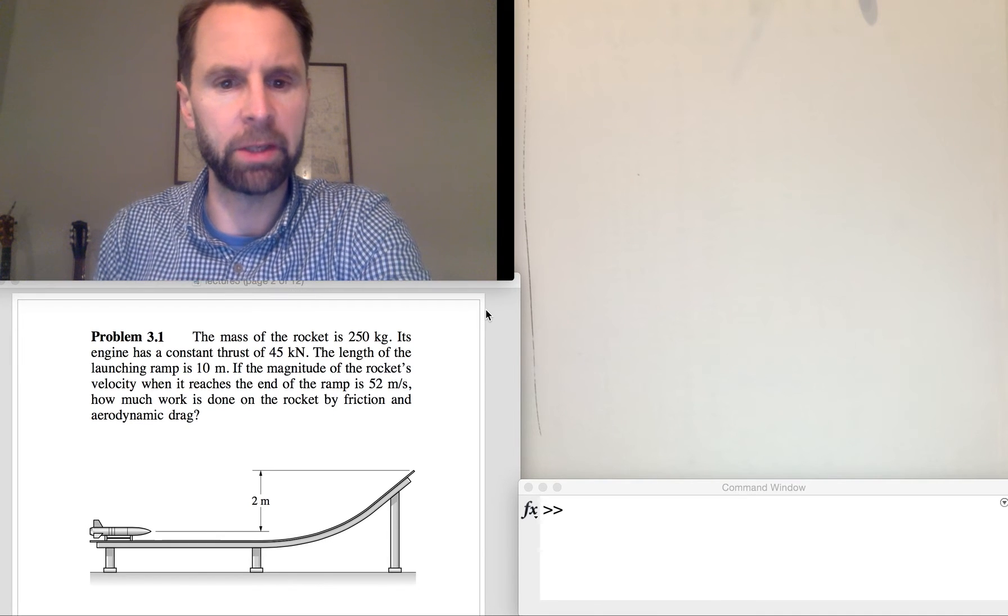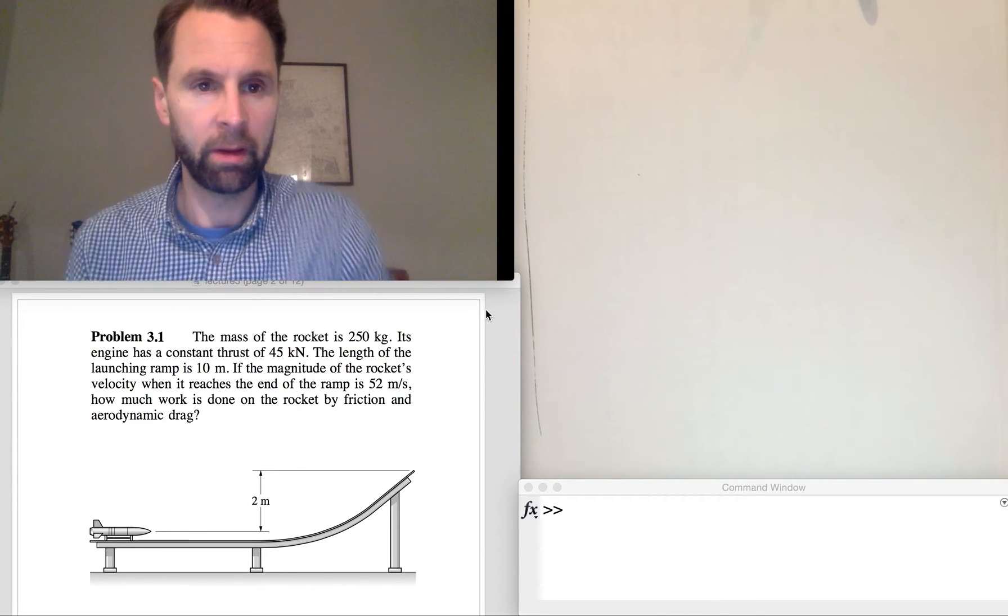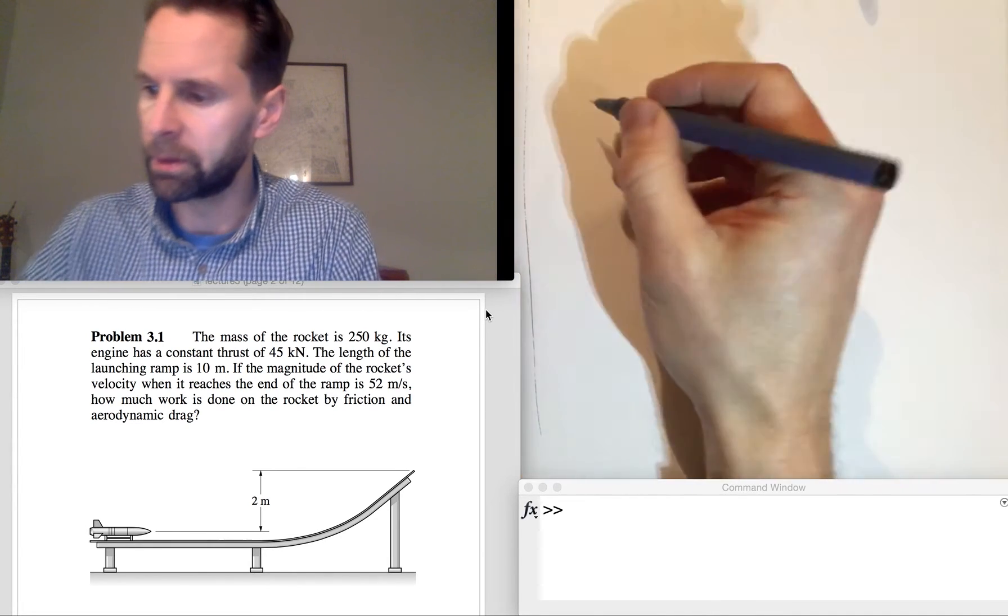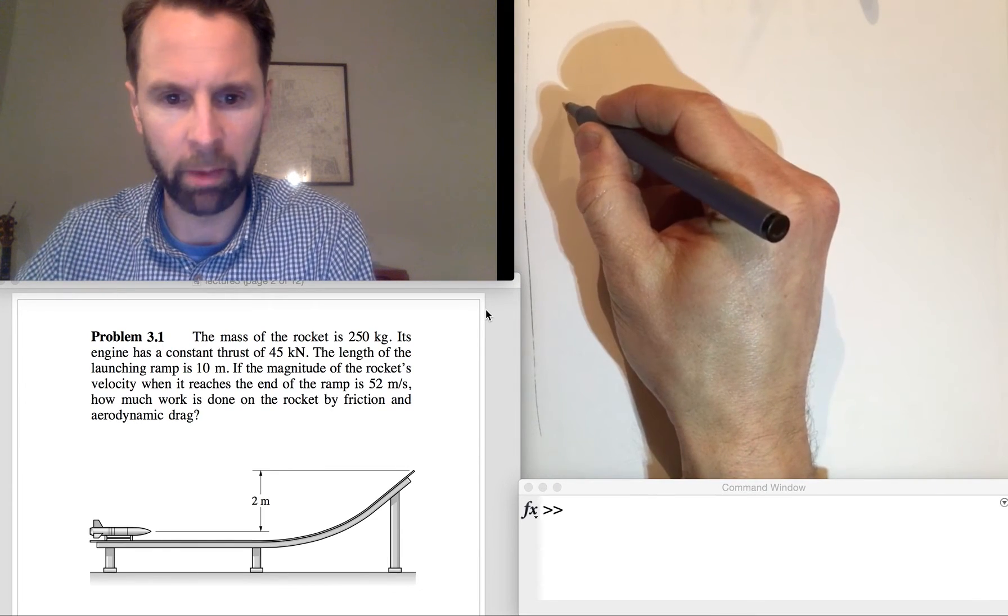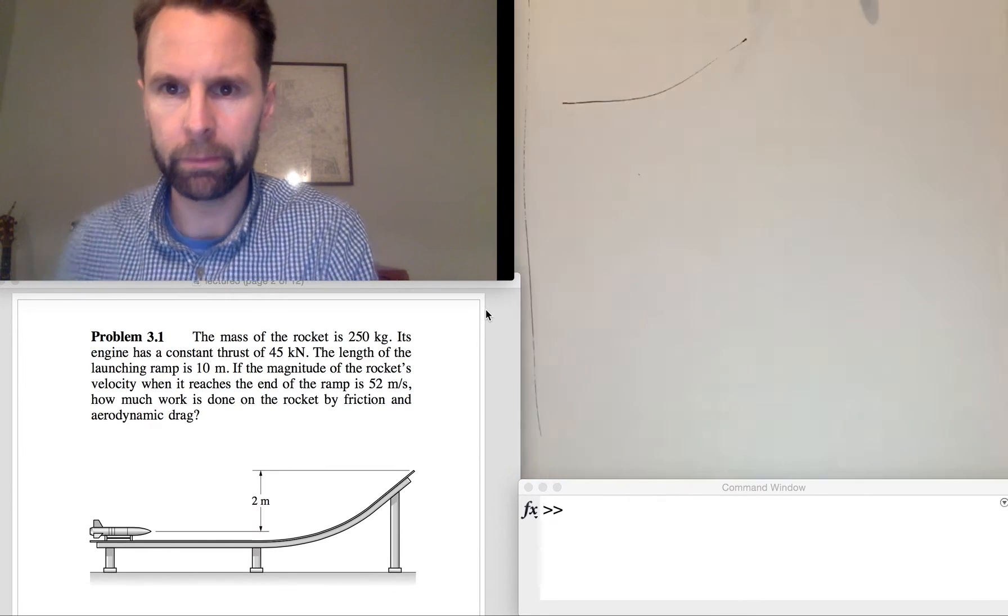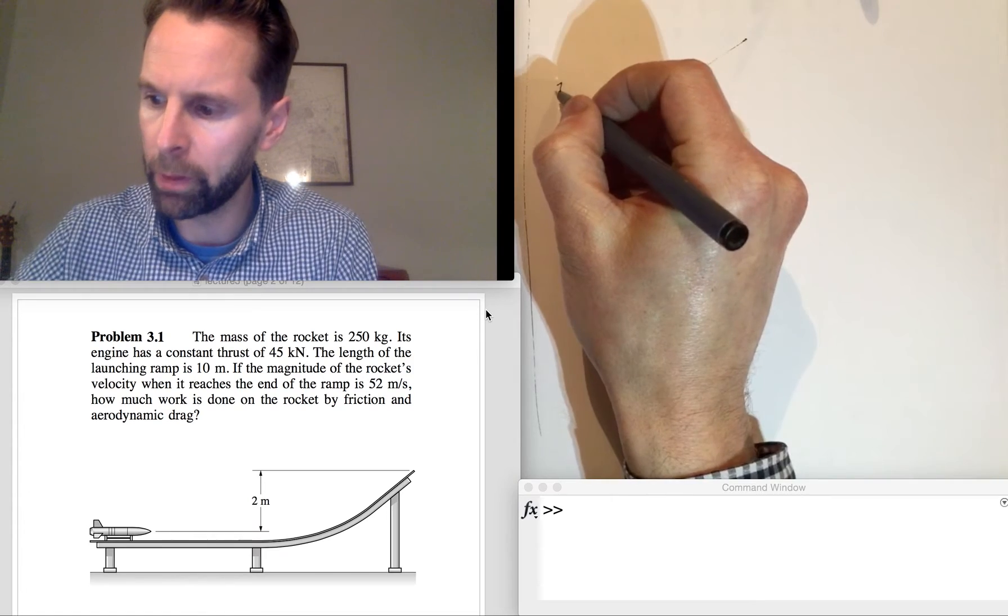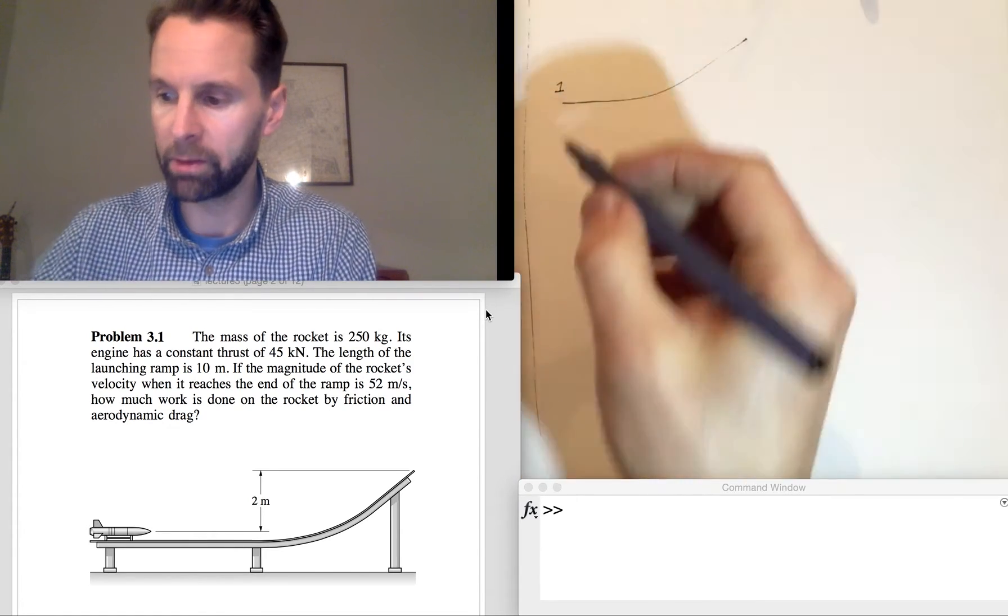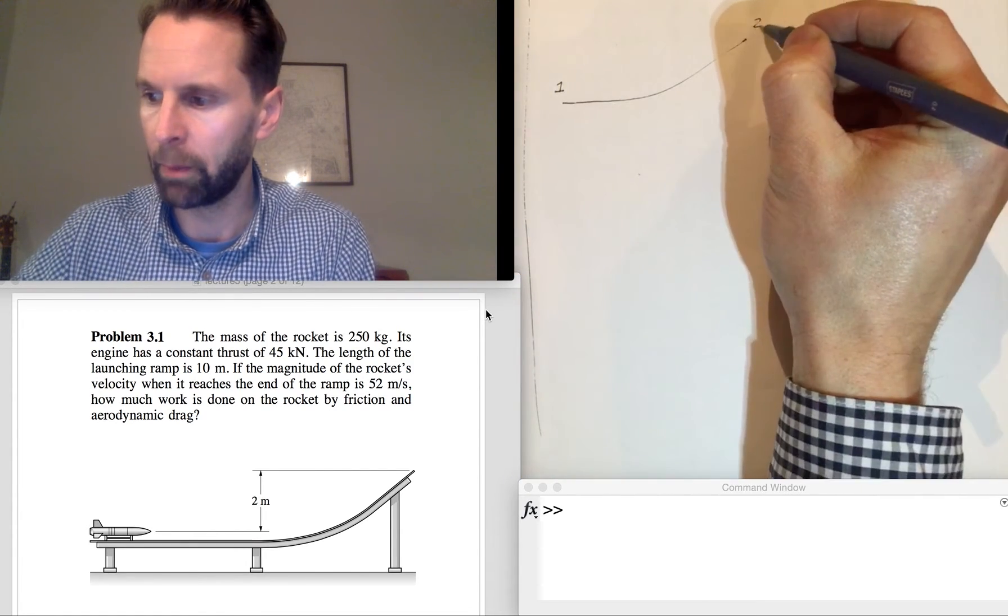So we can first of all just kick off by drawing the ramp. We'll call this position Position 1, so that's where it's at rest, and when it leaves the ramp we'll call it Position 2.